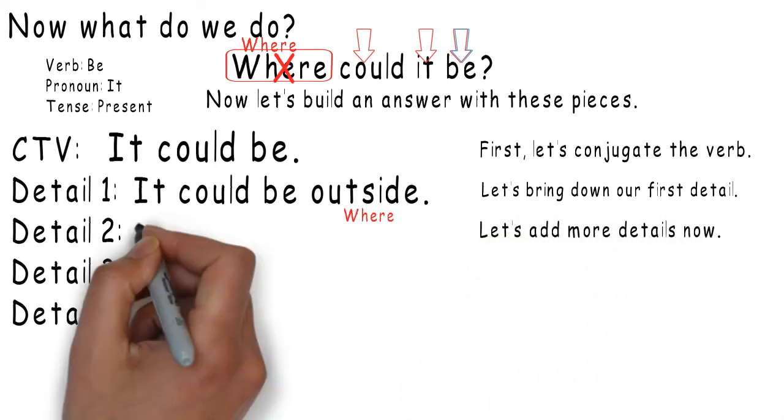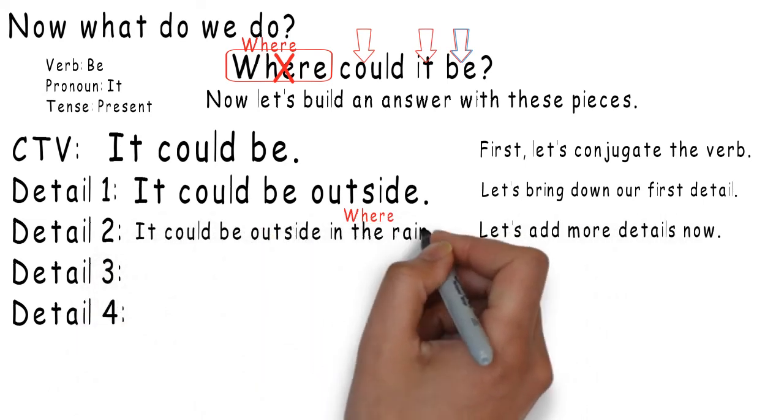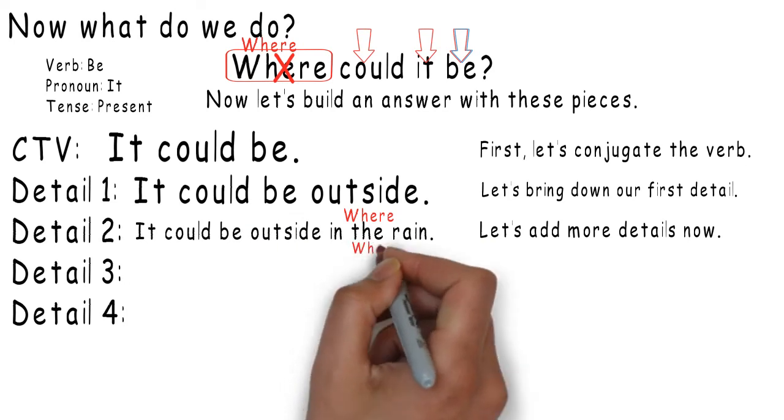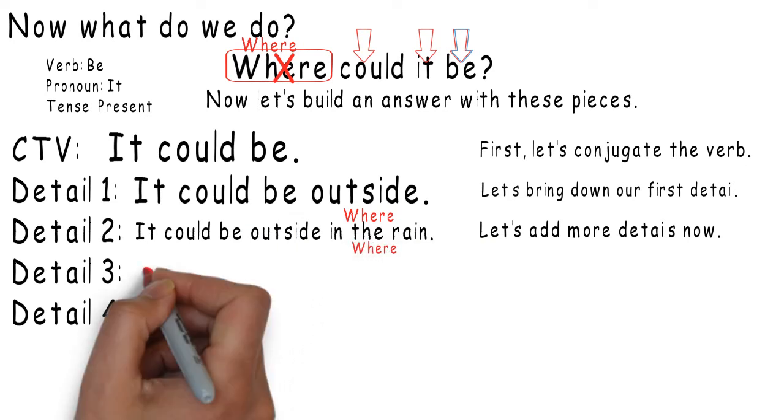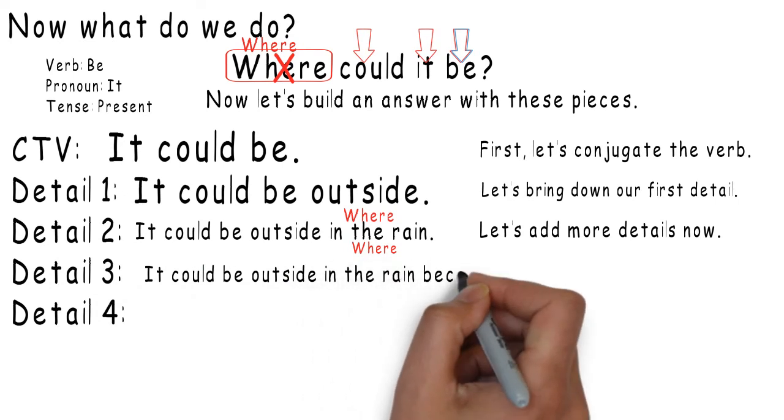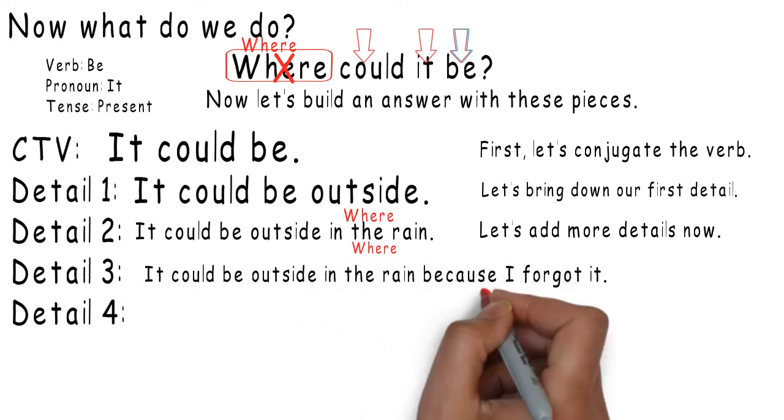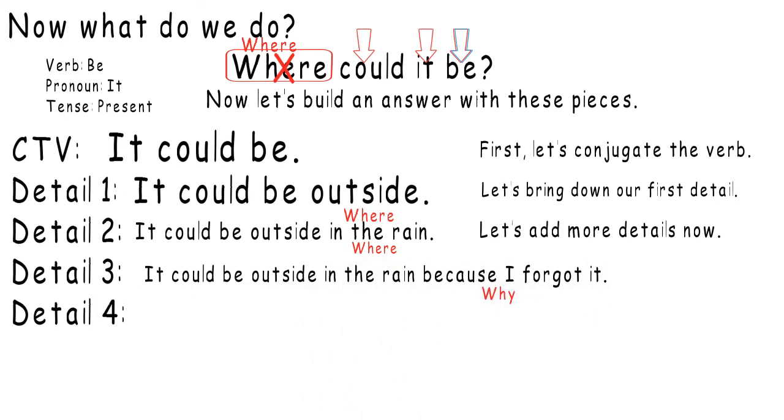Let's add more details now. It could be outside in the rain. In the rain. It could be outside in the rain because I forgot it. Why? Because I forgot it.